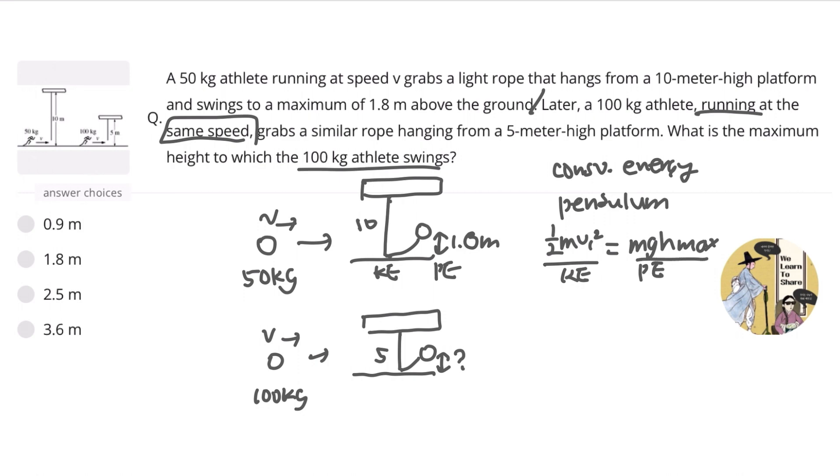And in this case, if we solve for h, we're going to have, canceling out m and 2g, h_max equals v₁² over 2g.